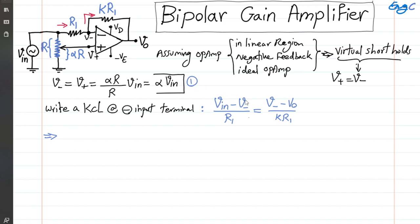Substituting for V negative in this equation, I can write Vin minus alpha times Vin. I can multiply both sides by K times R1.